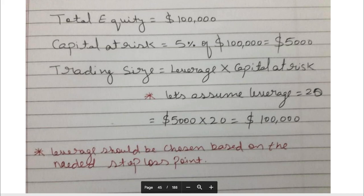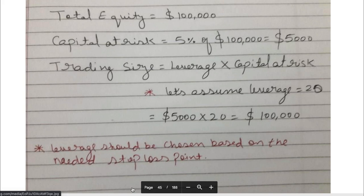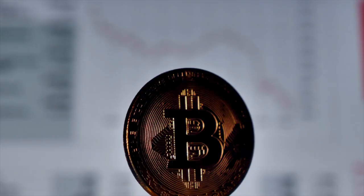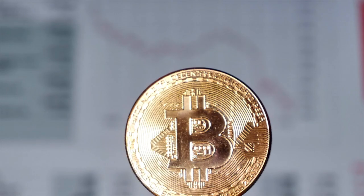So leverage usage is a function dependent on the stop loss, determined based on technical analysis. The author uses only technical analysis to determine the stop loss. The leverage multiple shall be determined by the stop loss, and we will learn the application of leverage in the stop loss chapter, rather than in this risk management chapter.